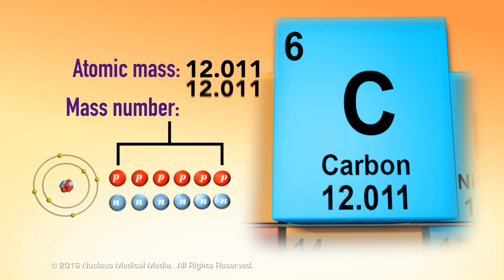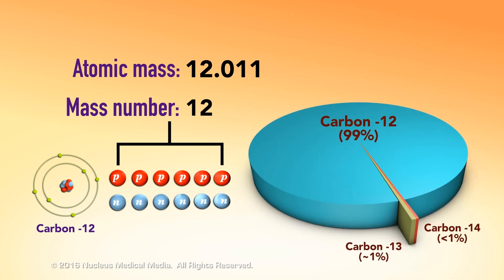However, you can determine the mass number of an element's most common isotope by rounding its atomic mass up or down to the nearest whole number. You can do this because the most common isotope has the most influence on the atomic mass.